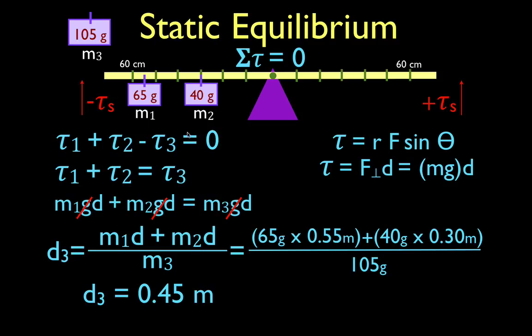If we place mass number 3 0.45 meters away from the pivot point right there, then that beam will be in static equilibrium, it will balance, it will not rotate, there will be no rotational acceleration.